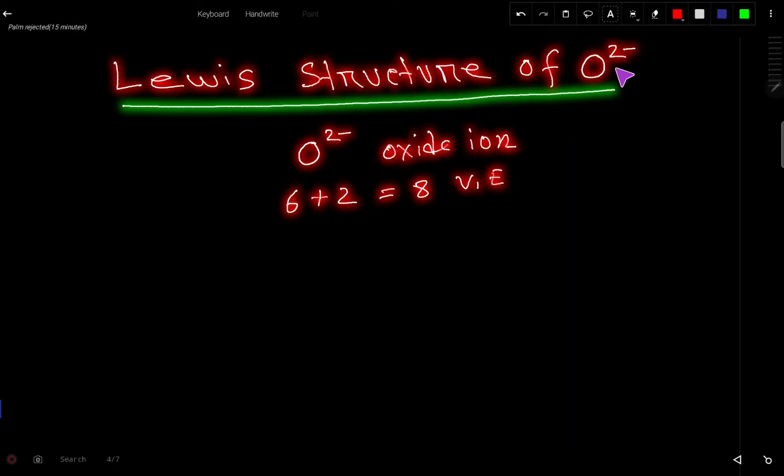Lewis structure of O2- oxide ion. First, you have to count the valence electrons for this ion.